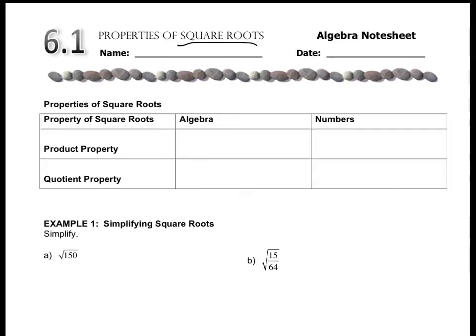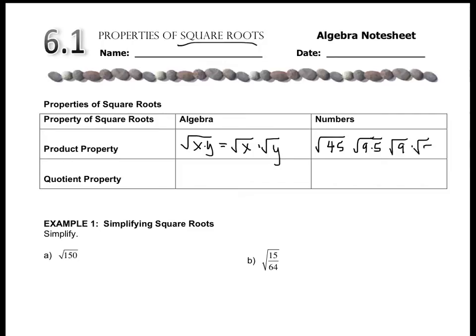These are two properties we talked about in our pre-six video: the product property and the quotient property. The product property states that if you have two quantities being multiplied, such as the square root of x times y, you can break that up into the square root of x times the square root of y. For example, the square root of 45 can be broken into the square root of 9 times the square root of 5, which is 3 radical 5.